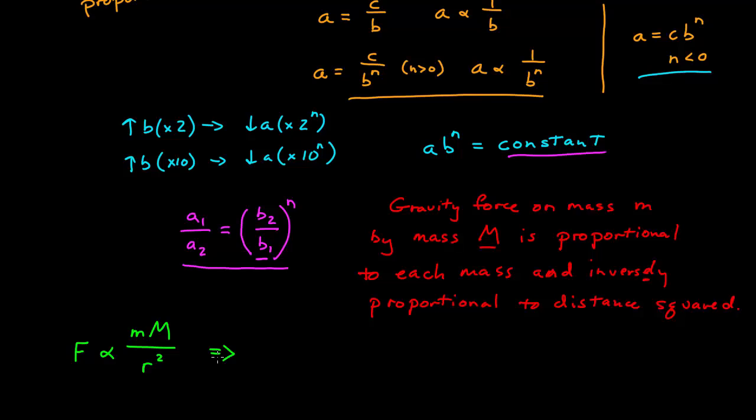What happens to the force between two objects if the distance between them doubles? If I want to compare the ratio of two gravitational forces, f1 and f2, that ratio is going to be the ratio of the two masses, m1 times capital M1 over small m2 capital M2 times r2 over r1 squared. And so I'm using our laws for the ratios of proportional as well as inversely proportional.